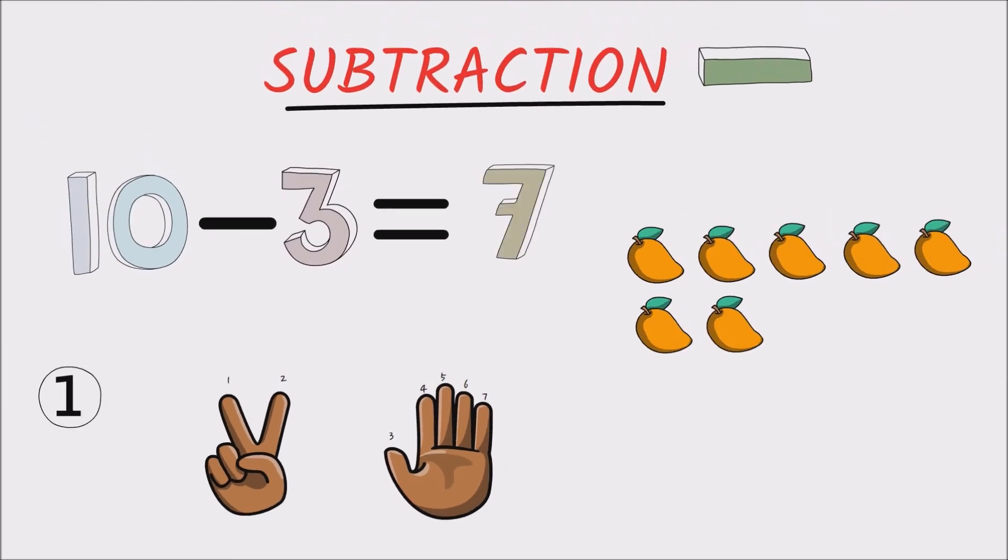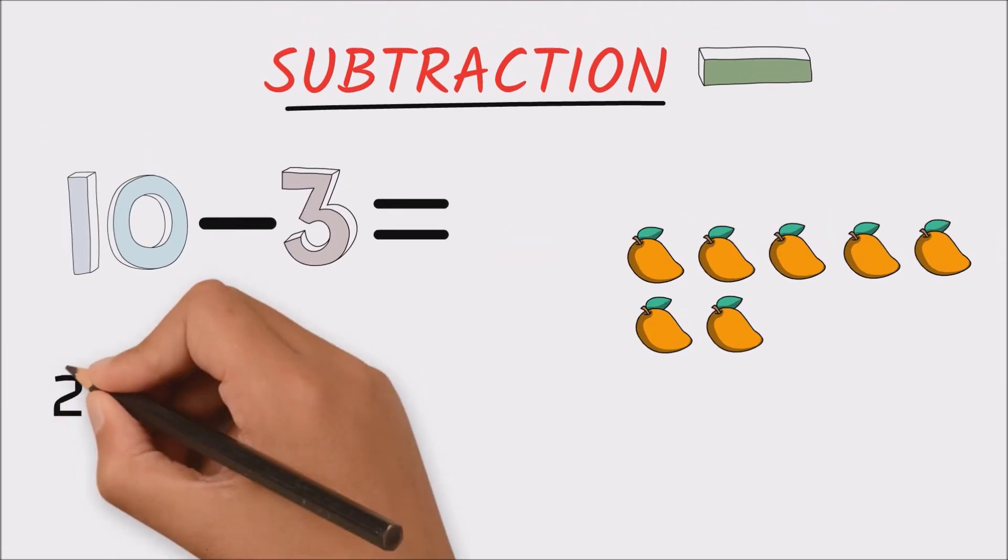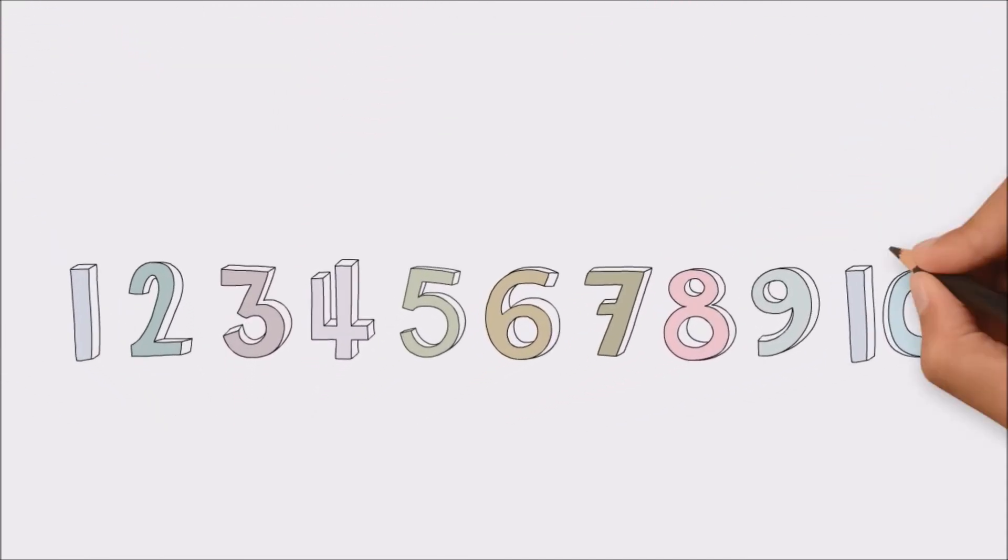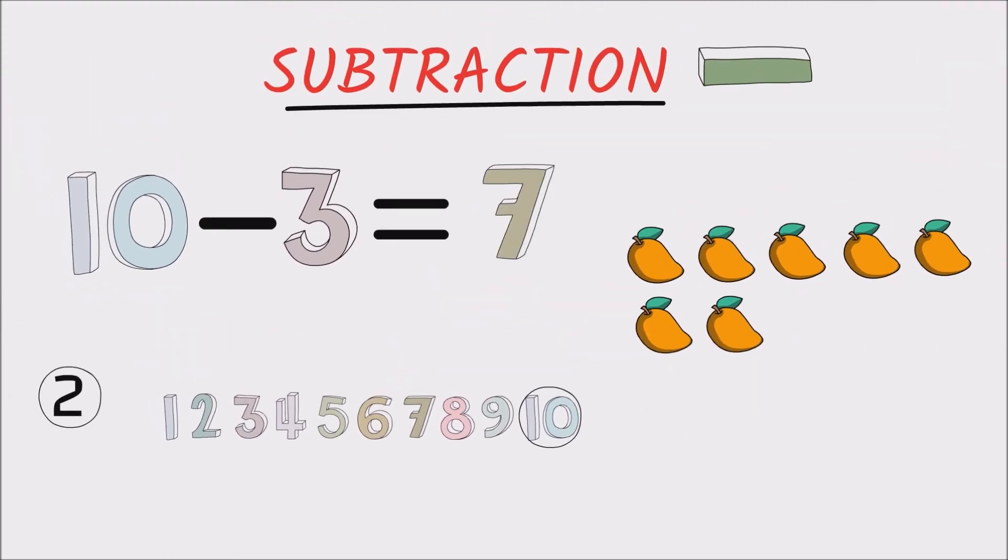Now the second method is without using fingers. We would start by thinking of the number ten, and we would count down three steps as if we were counting down from ten. So from ten, counting backwards, we would get nine, eight, seven for a result of seven. So the difference between ten and three is seven.